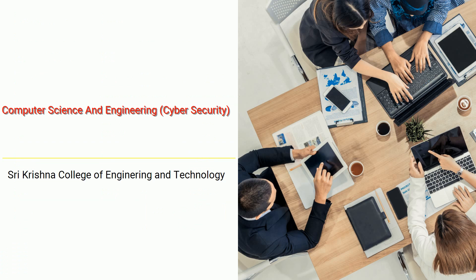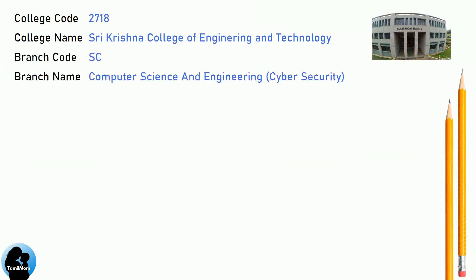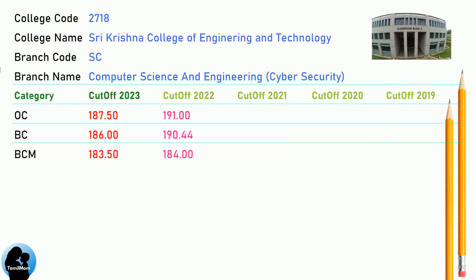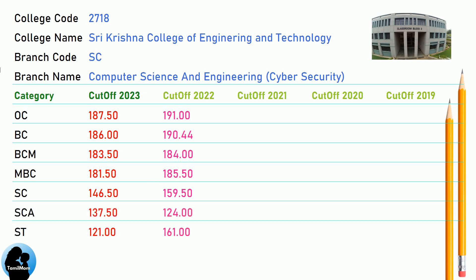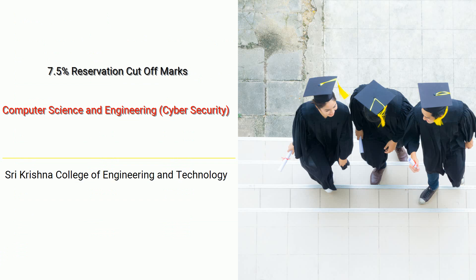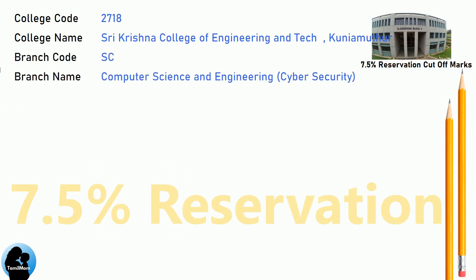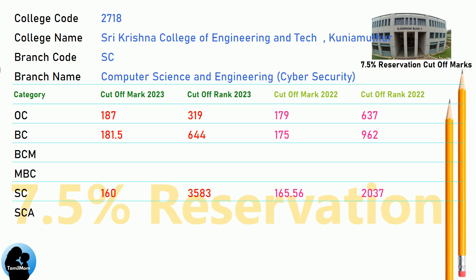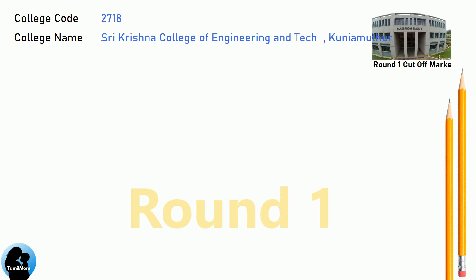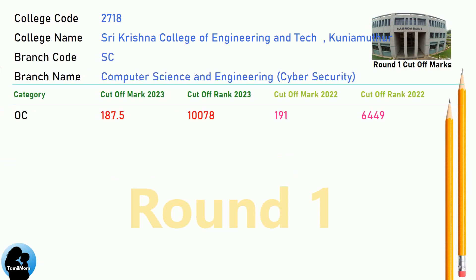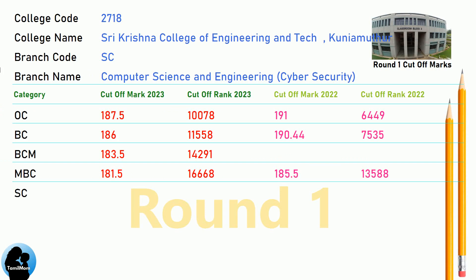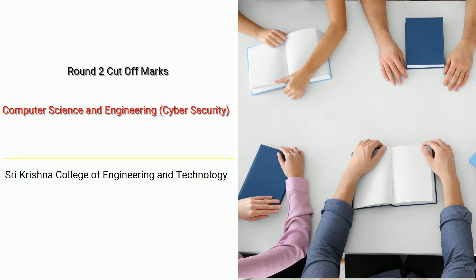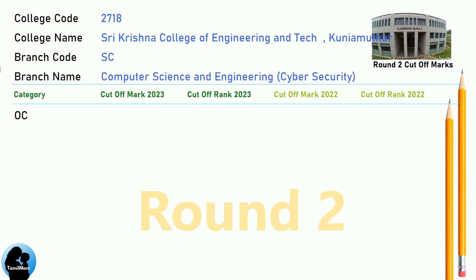DNEA Cut-Off for Shri Krishna College of Engineering and Technology in Computer Science and Engineering Cyber Security. DNEA 7.5 Reservation Cut-Off. DNEA Round 1 Cut-Off. DNEA Round 2 Cut-Off for Shri Krishna College of Engineering and Technology in Computer Science and Engineering Cyber Security.